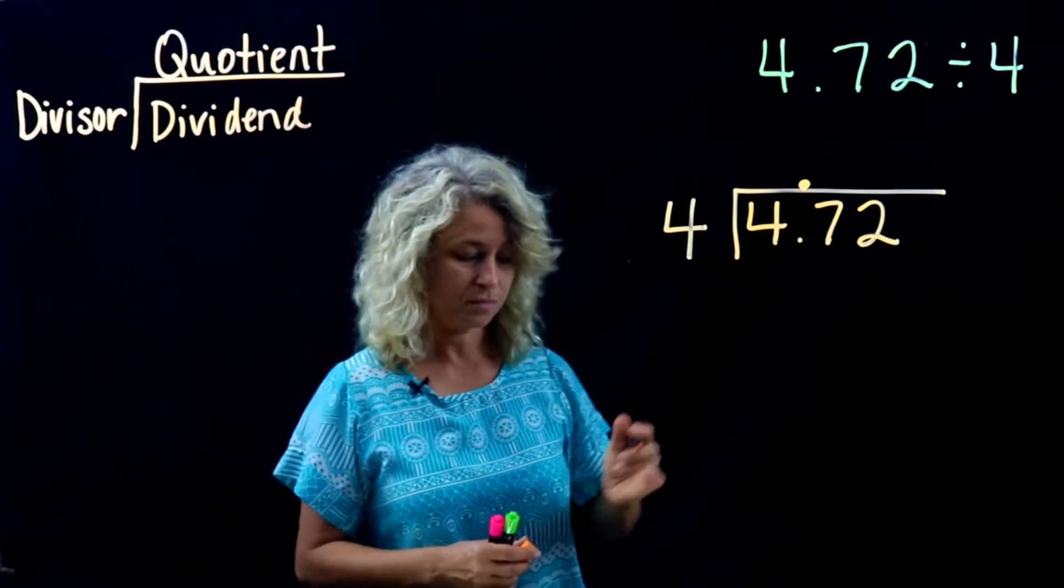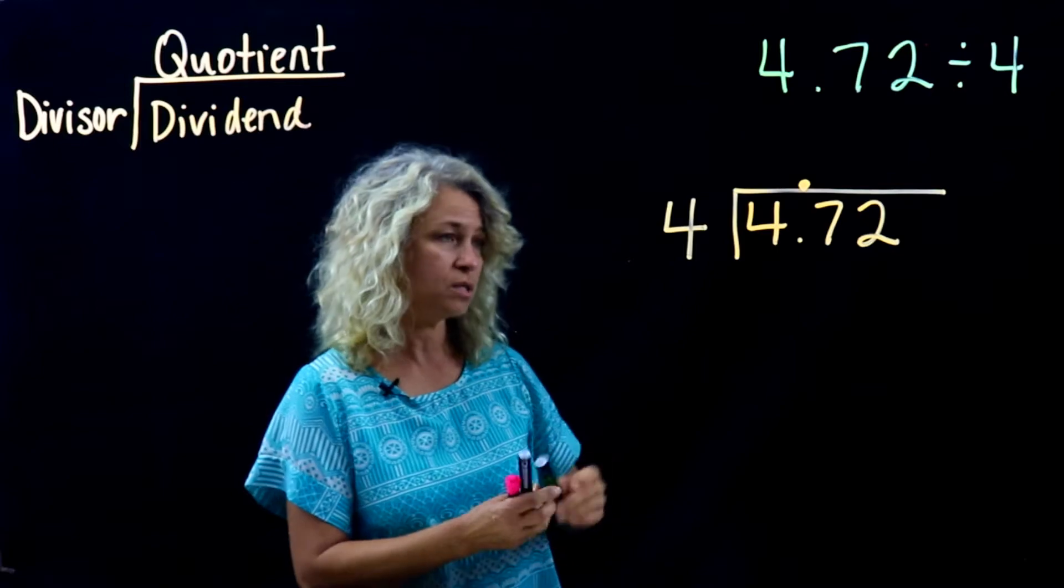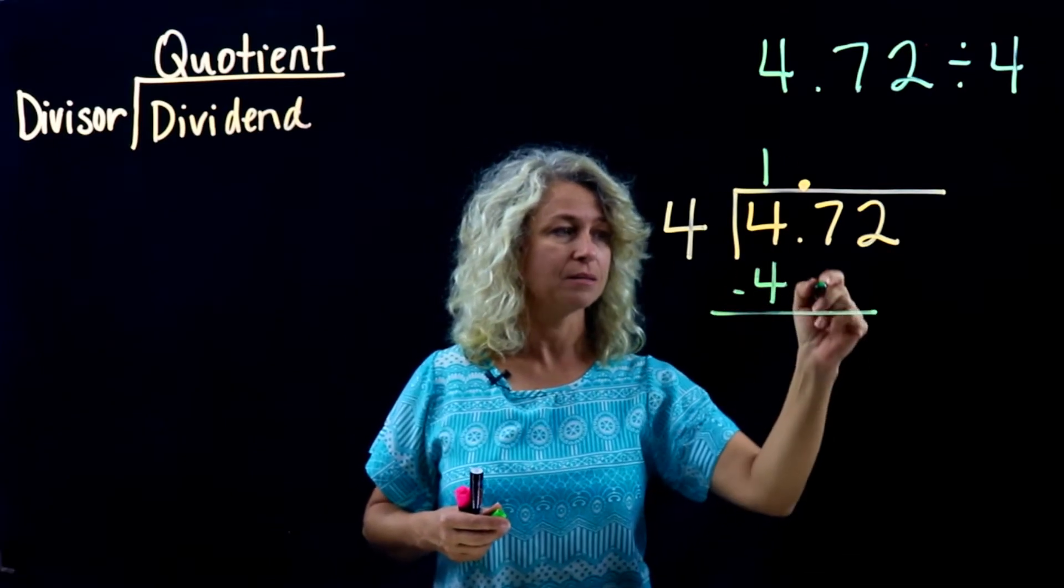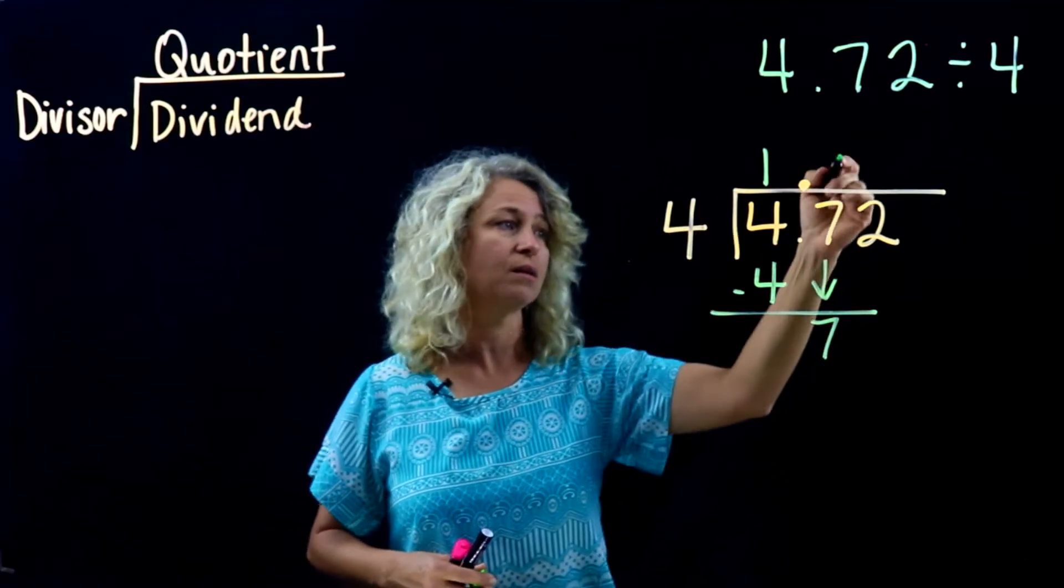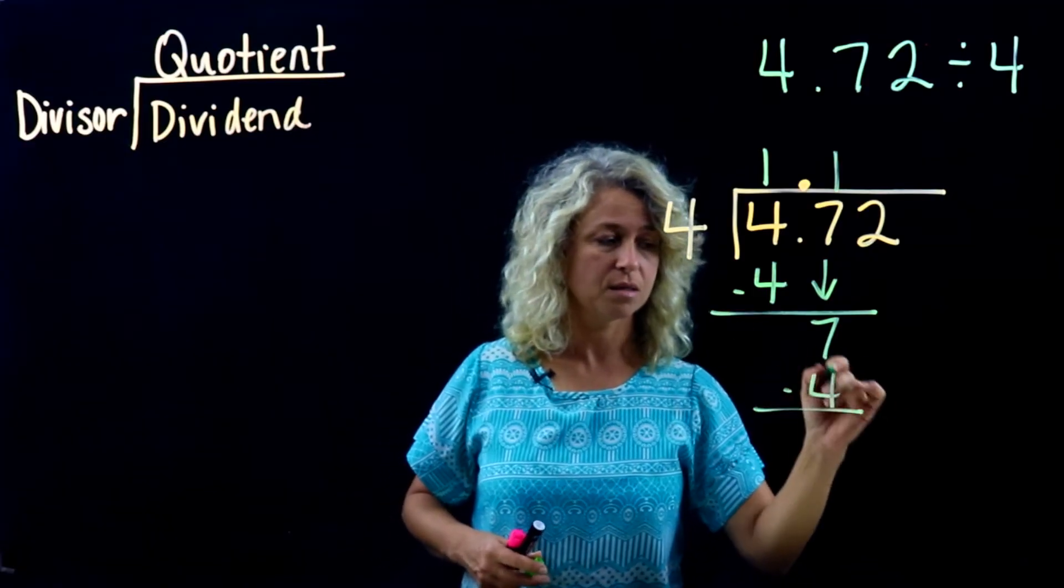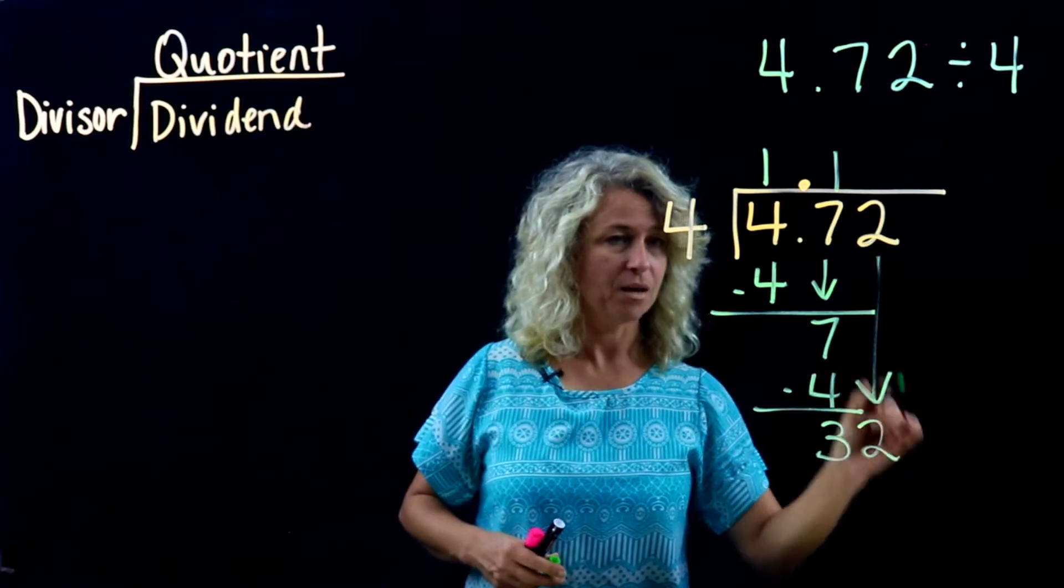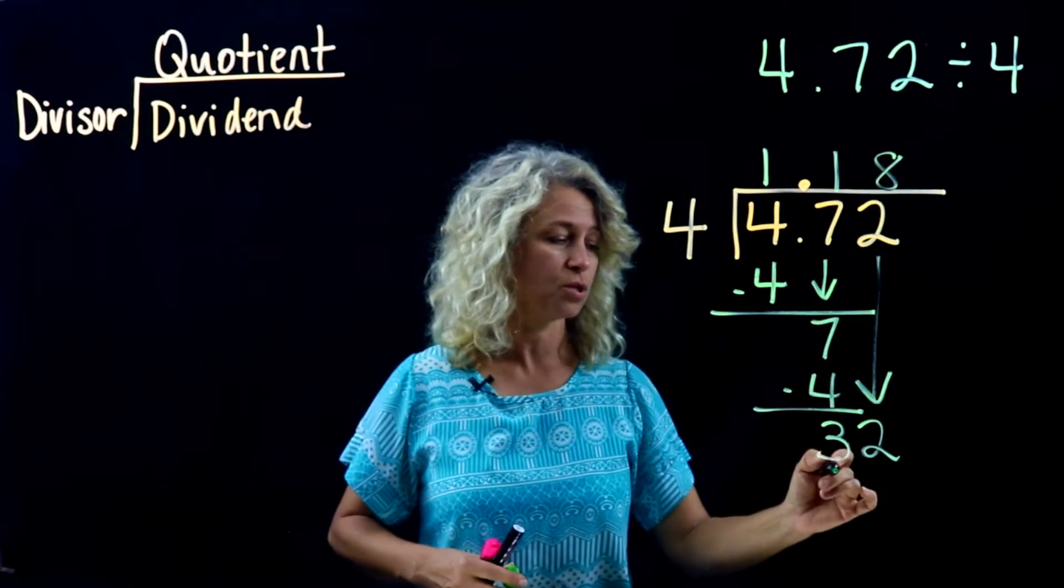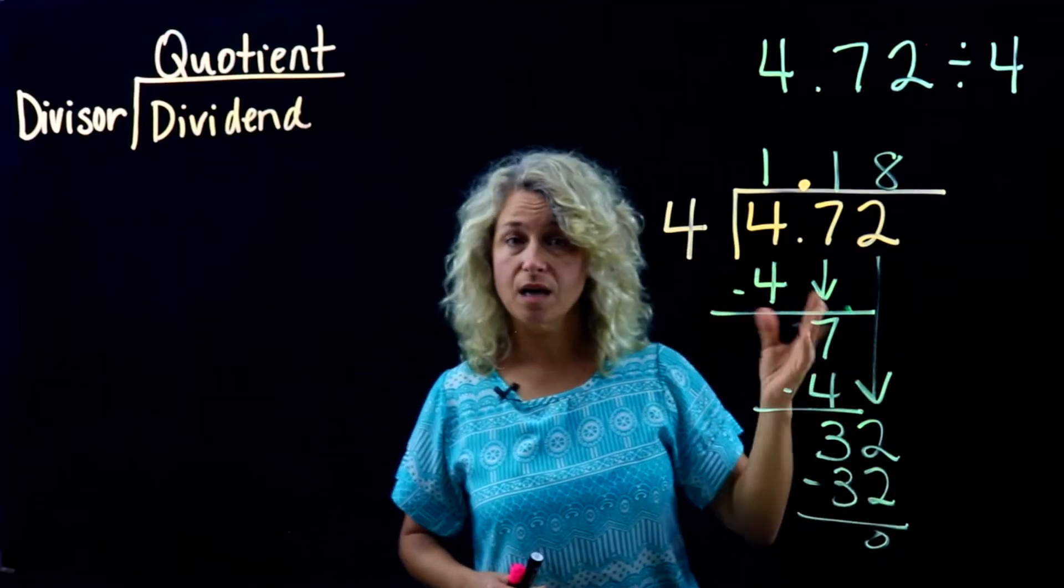Then divide like usual. Four goes into four one time, one times four is four, subtract, bring down. Four goes into seven one time, one times four is four, subtract, bring down your next number. And four goes into thirty-two eight times, eight times four is thirty-two. So there you have it.